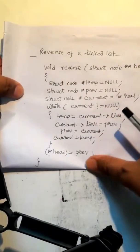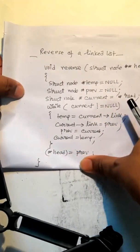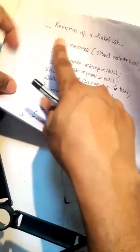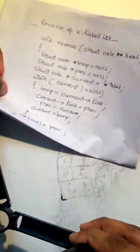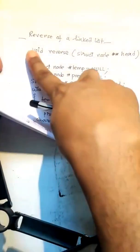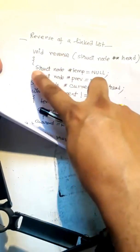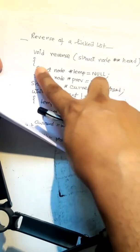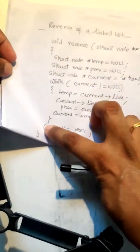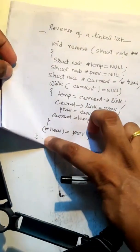We have to assign the previous pointer. So we have to do a reverse of the linked list. The important function is that we have to note down the function. If asked for the algorithm, we write the steps: step 1 initialization, step 2 is the while loop, step 3 is the end, and step 4 is the exit.